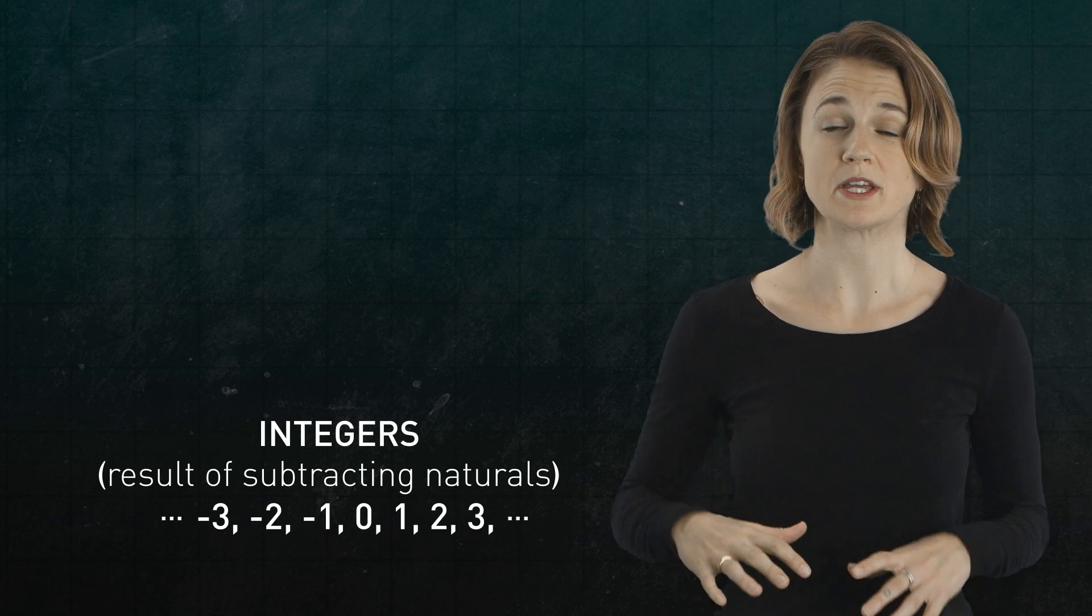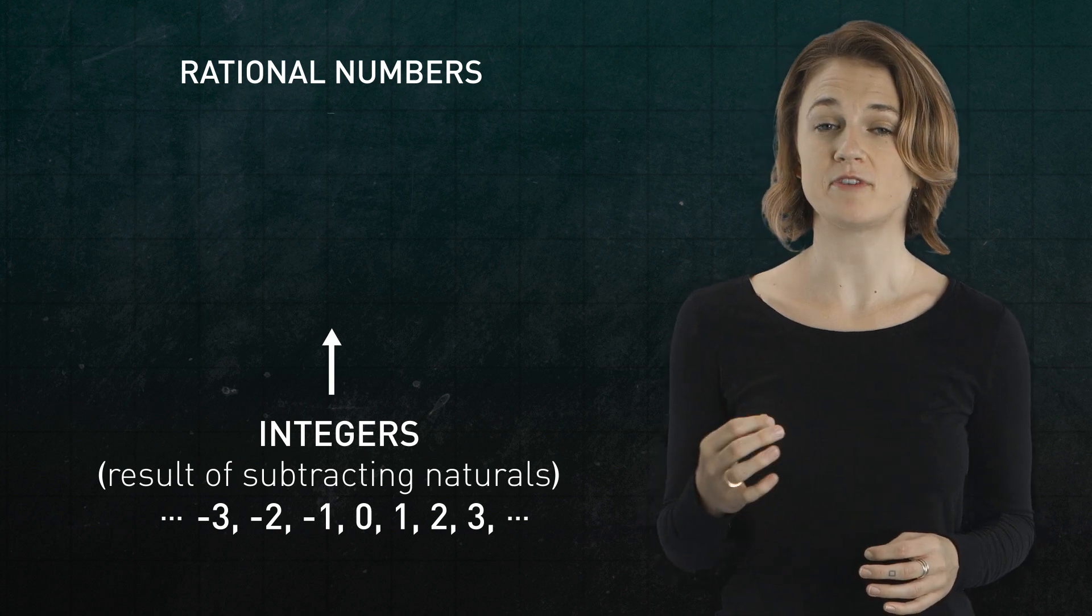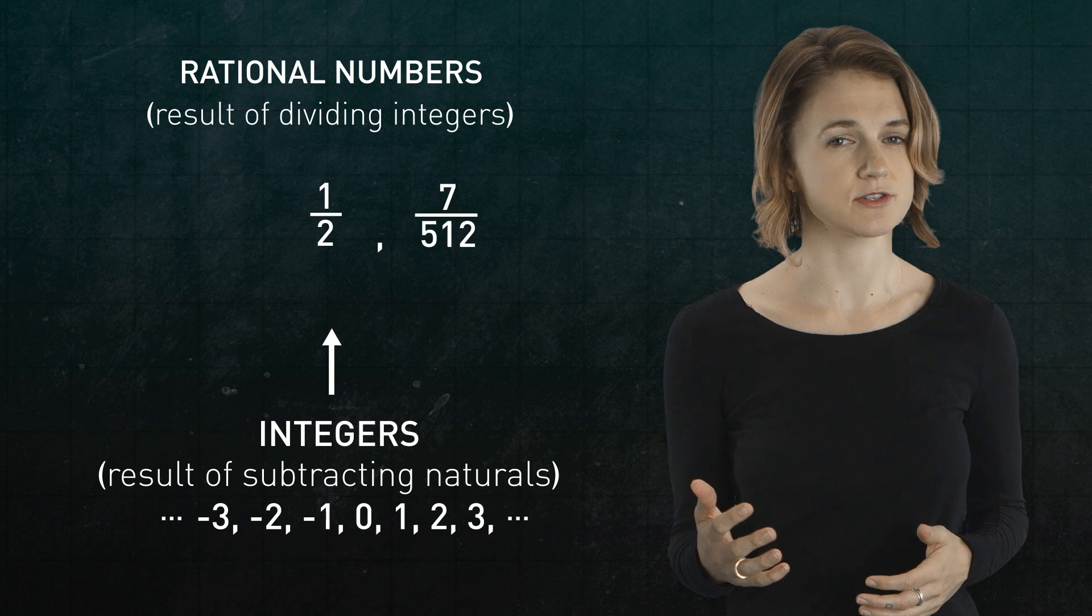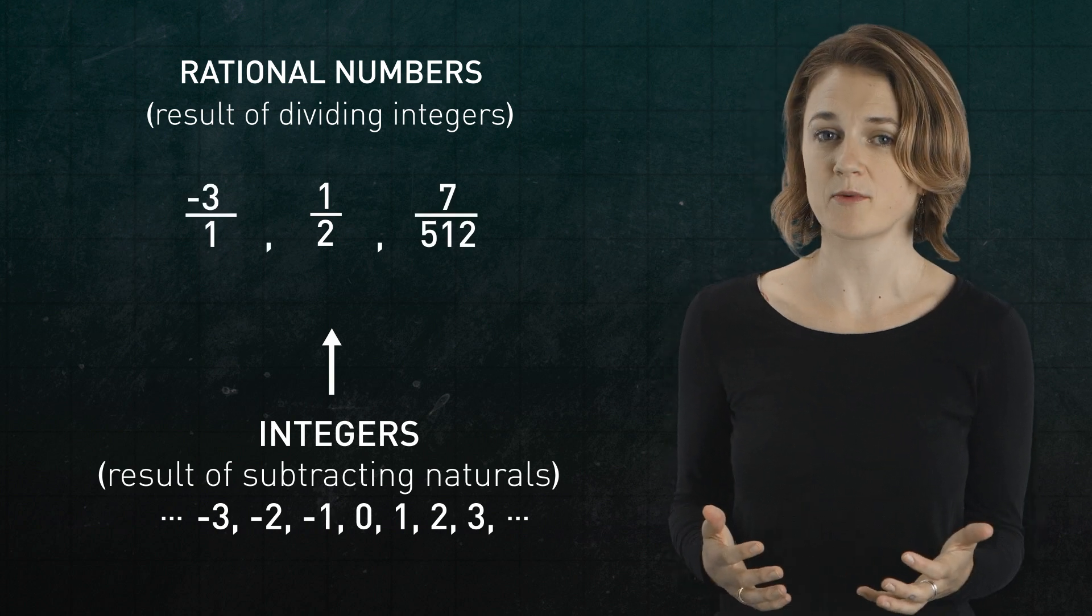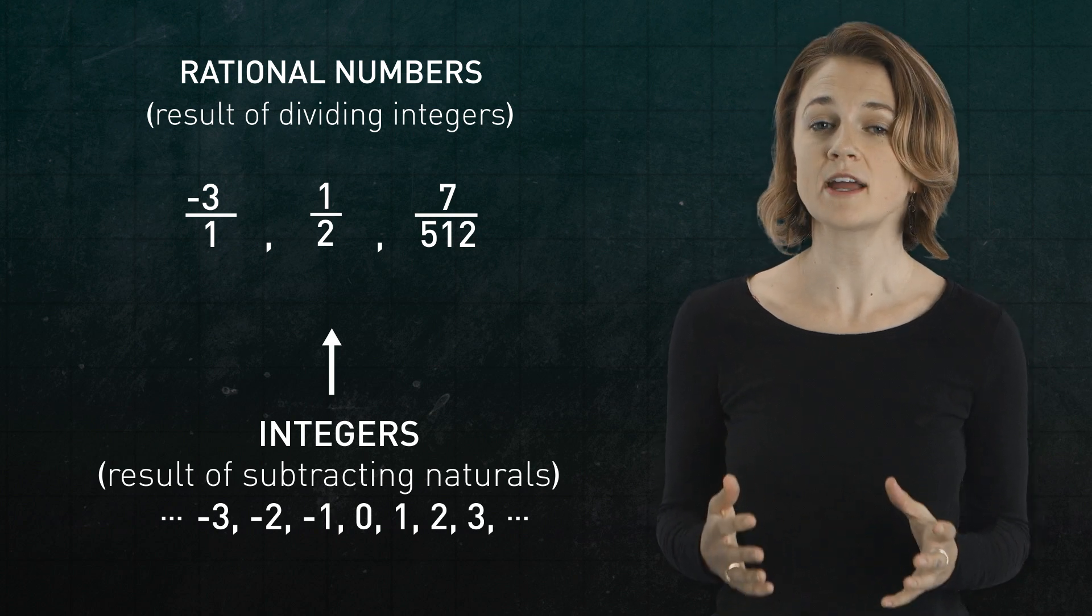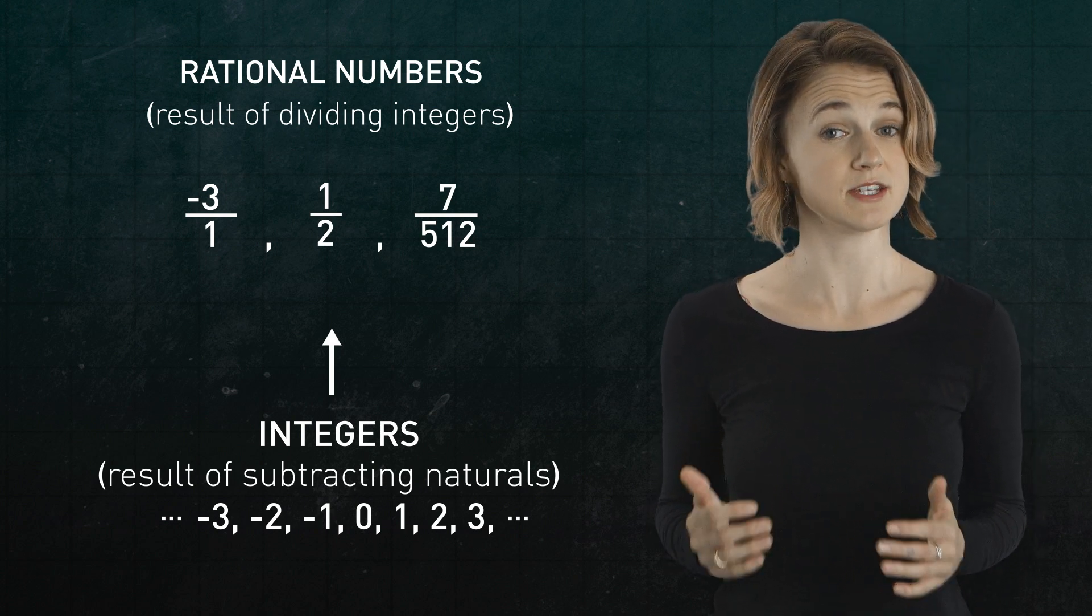And then from the integers, we can build the rational numbers. They're all the possible things you can get by dividing one integer by another, like one half, seven over 512, or negative three divided by one. And similar to the previous construction of the integers, we can define the properties of the rational numbers in terms of the properties of the integers.